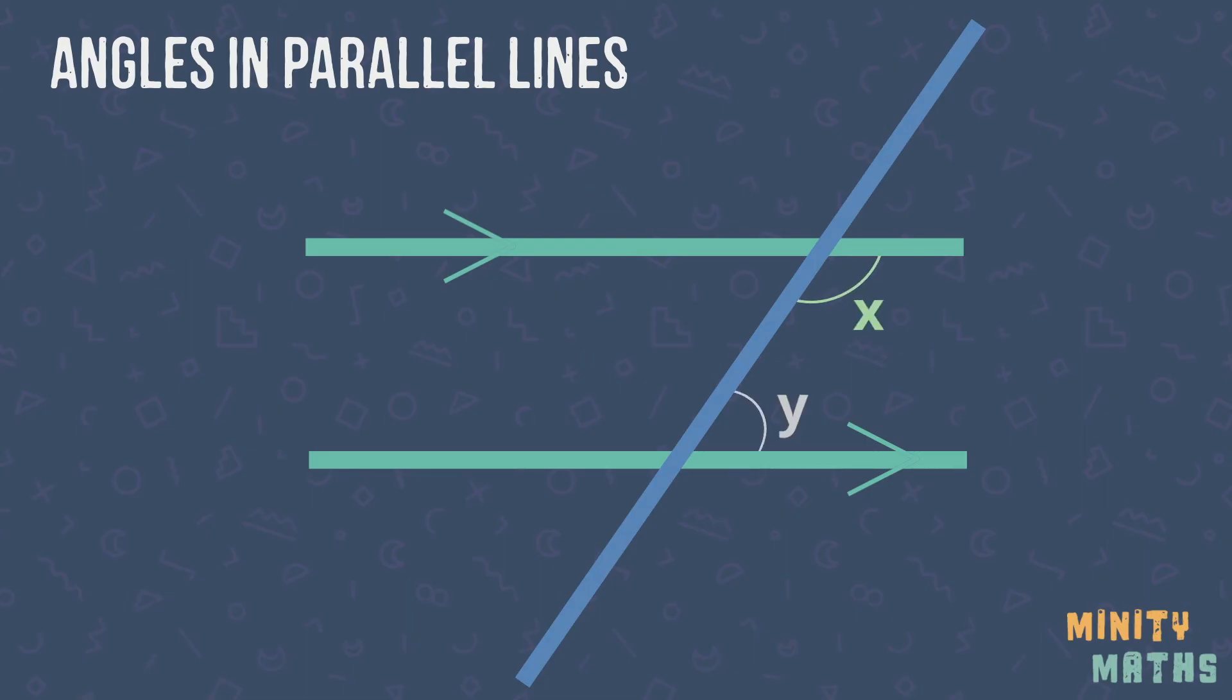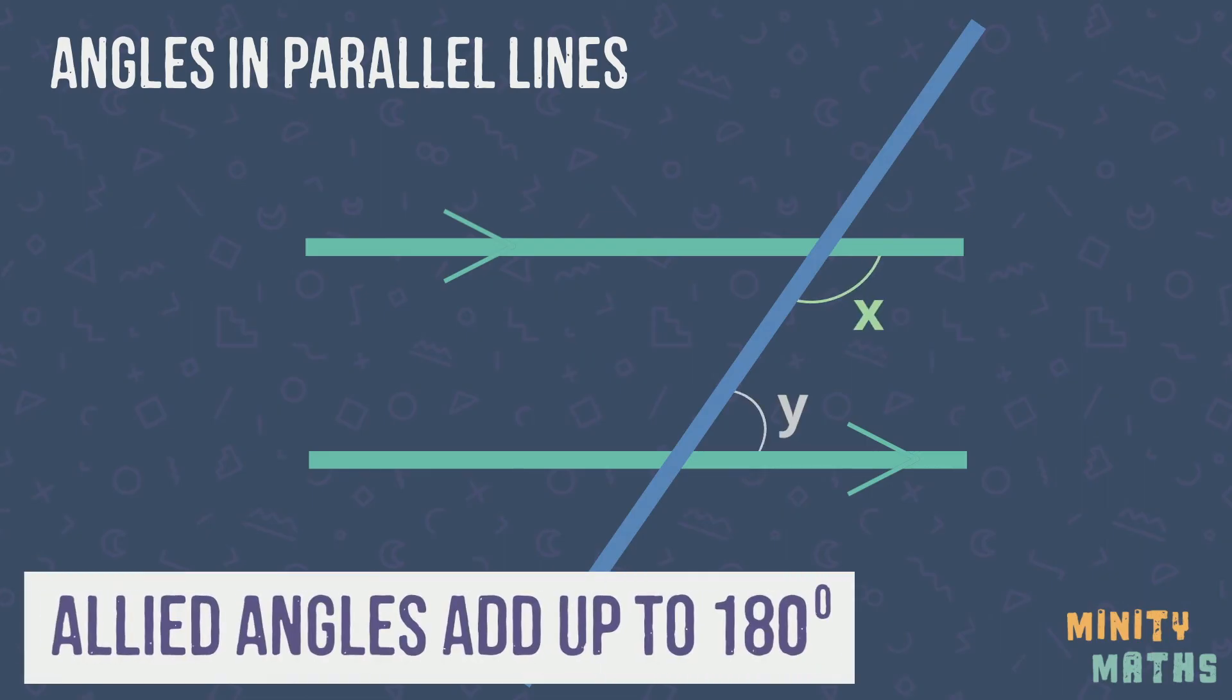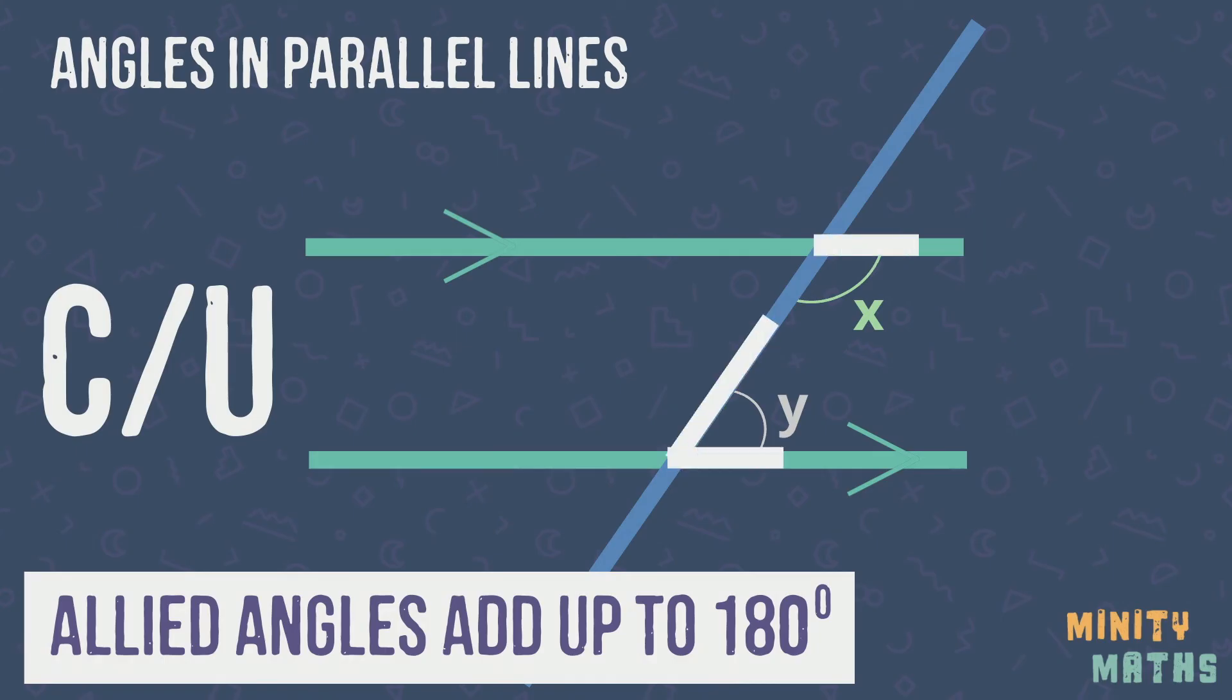Allied angles are angles which can be found within a C or U shape. These angles always add up to 180 degrees. Again, the C shape can actually be backwards. Here is an example.